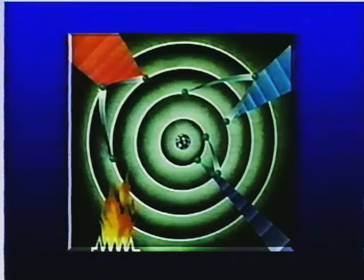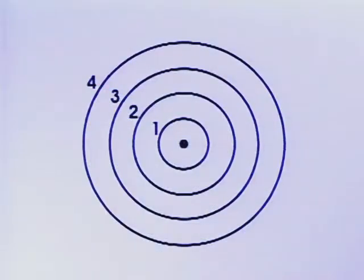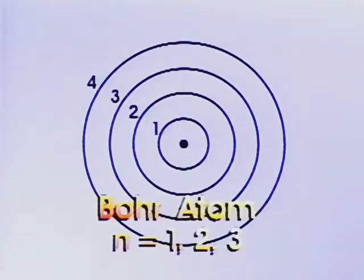As the radius of each orbit increases, so does the energy of the electron. Each orbit is assigned a principal quantum number n, which can be 1, 2, 3, etc., depending on its radius.